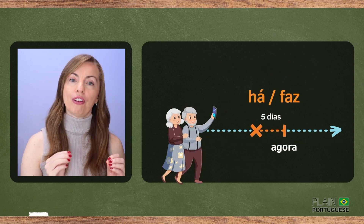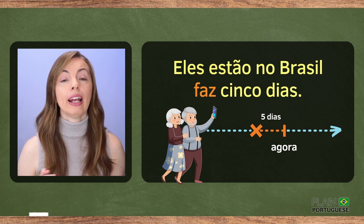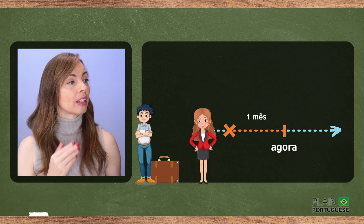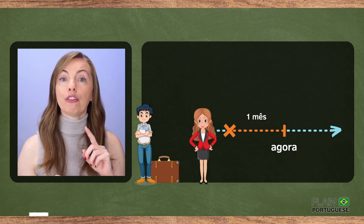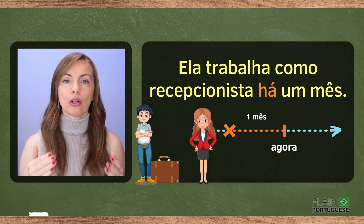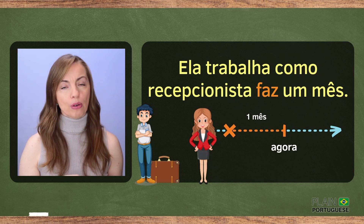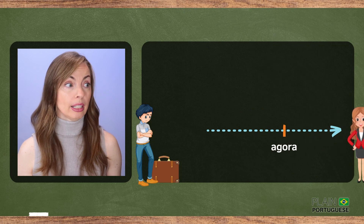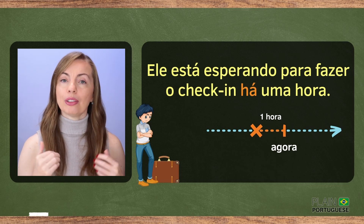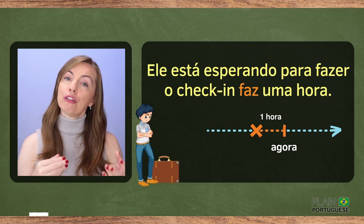For example, 'They have been in Brazil for five days.' Another example: 'She has worked as a front desk clerk for one month' — Ela trabalha como recepcionista há um mês, or faz um mês. He seems to be getting impatient — he's been waiting to check in for one hour: Ele está esperando pra fazer o check-in há uma hora, or faz uma hora.